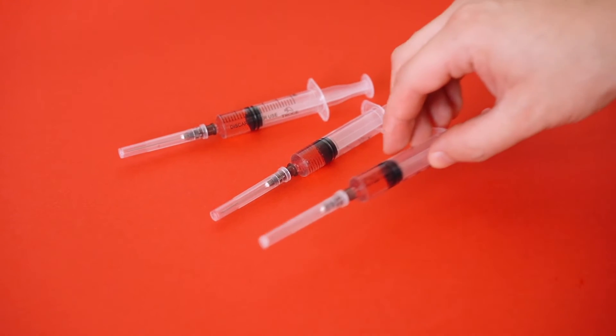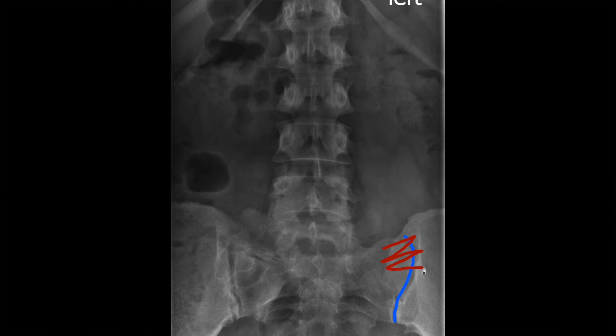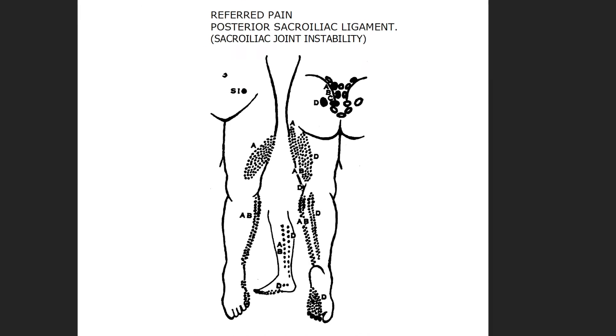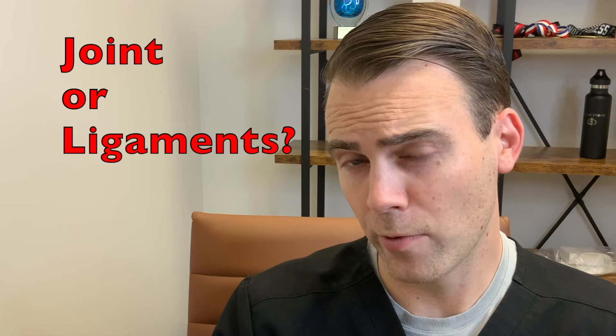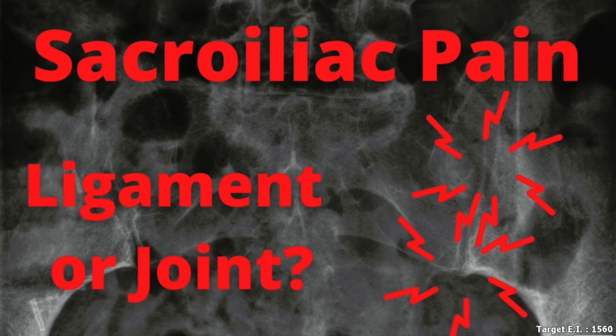For the sacroiliac ligament, I'll do a provocation test where I'll put the needle right into the ligament and work it along the length of the ligament. And if it reproduces the same pain in the same referral pattern, then we can confidently say that's the pain generator. Sometimes we'll put an anesthetic in just to give us a secondary confirmation that that's the problem spot. So through these diagnostic tests, we can determine which is the actual pain generator — whether it's the actual sacroiliac joint or the sacroiliac ligaments.